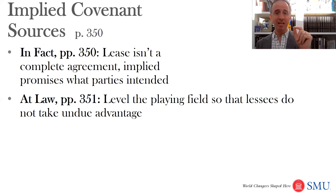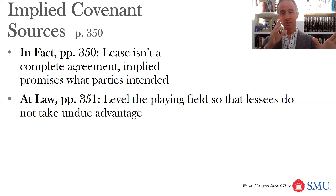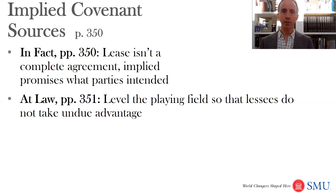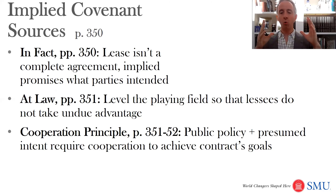Another theory of implied covenants is that they are designed to level the playing field — they are legal rules and perhaps cannot be opted out of. So you might say that even if the oil and gas company says it doesn't want to have to either drill or pay delay rentals, and just gave a bonus to wait and see if the lessor gets a royalty, we could say that at law we think that's an unfair rule and we're not going to allow parties to agree to that. So then we would say that's an implied covenant at law.